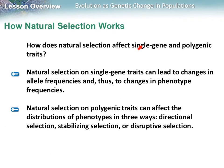Remember we talked about both single gene and polygenic traits. A single gene trait would be like tall and short in pea plants, or whether you can roll your tongue or not. Polygenic traits would be things like skin color, eye color, and height. Natural selection on a single gene trait leads to changes in the frequency of the alleles, and that leads to changes in phenotype frequency — phenotype being the outer appearance. Natural selection on polygenic traits affects the distribution of the phenotype in three ways: directional, stabilizing, and disruptive selection.